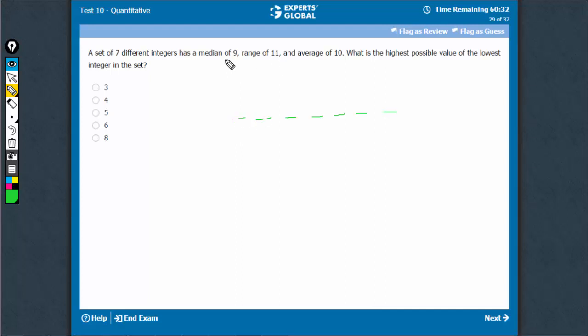There are 7 terms here. The median is 9, so the middle value here is 9. The range is 11. Average is 10, so that means the total is 10 × 7, 70.